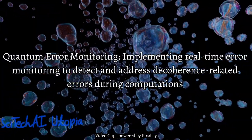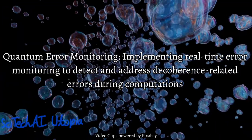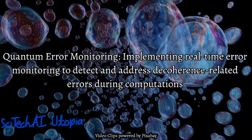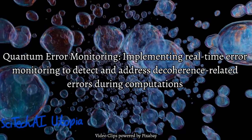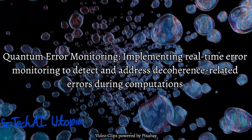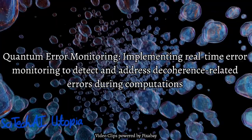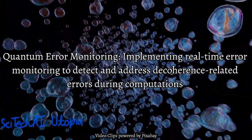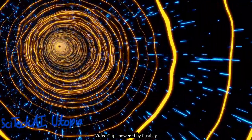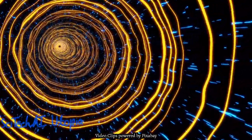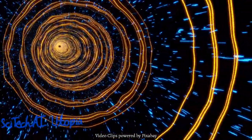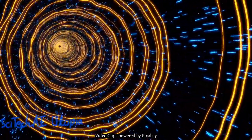Solution 24: Quantum Error Monitoring. Real-time quantum error monitoring continuously tracks the evolution of quantum states during computations. By detecting errors as they occur, this approach allows for immediate correction, minimizing the accumulation of errors due to decoherence. Quantum error monitoring is crucial for fault-tolerant quantum computing.